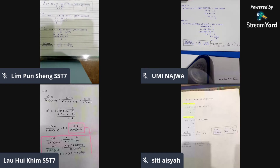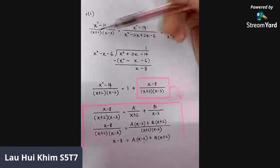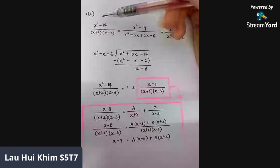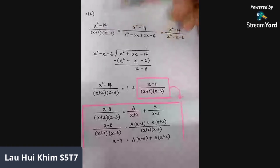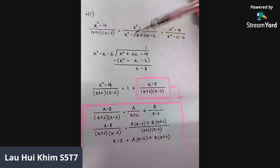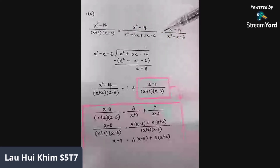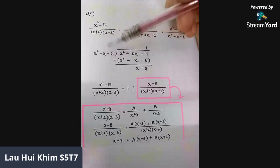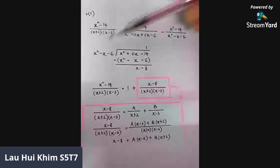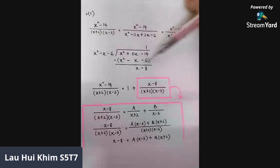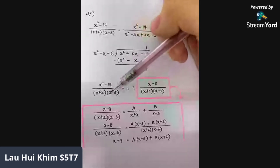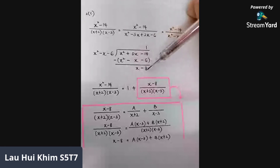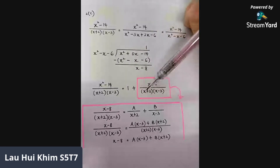Let's discuss question 2c. The question given is (x² − 14) / [(x + 2)(x − 3)], and we are asked to express this in partial fractions. First, we expand the bracket: equals (x² − 14) / (x² − 3x + 2x − 6), which simplifies to (x² − 14) / (x² − x − 6). Then we do long division: dividend is x² + 0x − 14, and the divisor is x² − x − 6. x² divided by x² gives 1. 1 times the divisor gives x² − x − 6. Subtracting, we get remainder x − 8.